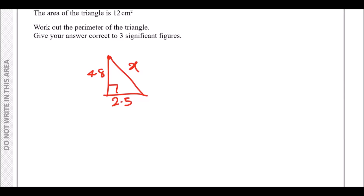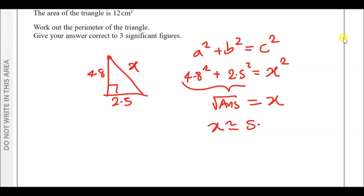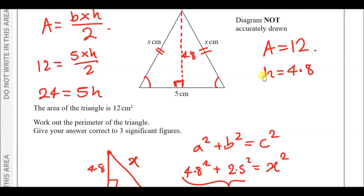Pythagoras's theorem: a² + b² = hypotenuse². Here the hypotenuse is x, so: 4.8² + 2.5² = x². Smash this into your calculator — 4.8² + 2.5² gives approximately 29.29. Since that equals x², take the square root to find x ≈ 5.412. Don't round yet — only round at the very end.